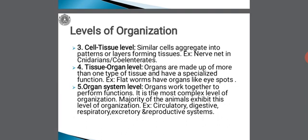The third type of body organization is cell tissue level. Here, similar cells aggregate into patterns or layers forming tissues. Example: nerve net in cnidarians. As the name suggests, there is no formation of an organ yet, so all the body functions are carried out through tissue level only.